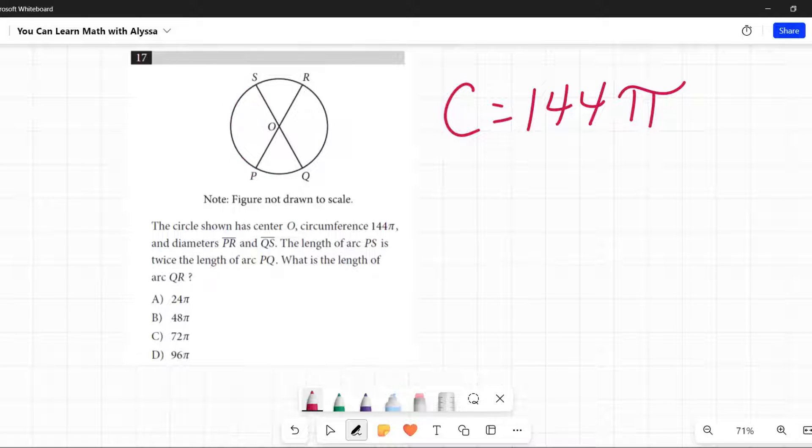I'm going to put some variables in here. So if I call PQ X, I know that PS is twice that long. It is 2X. What is the length of arc QR, this one? How long is it?